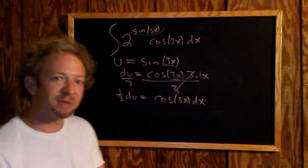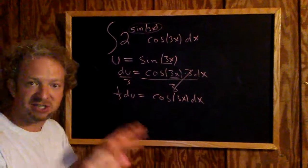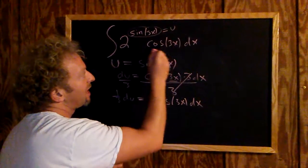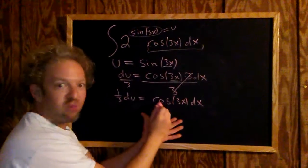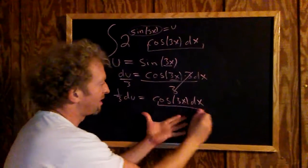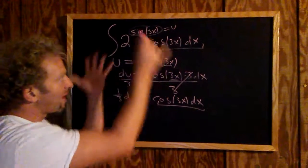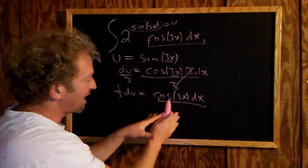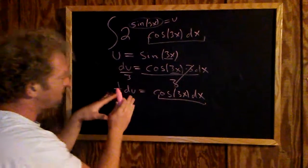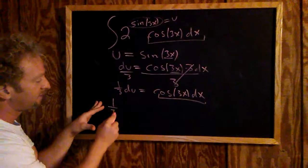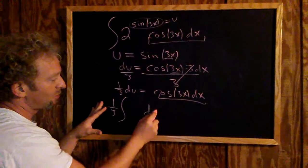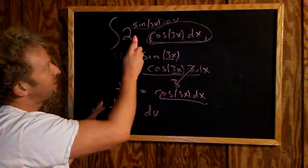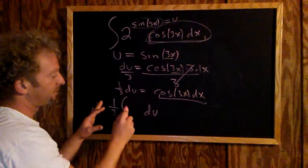Now we're ready to make the substitution. This piece that's circled is our u, and this piece here is 1/3 du. So now we're going to rewrite everything all at once: cosine 3x dx is going to be 1/3 du. We replace this, and then we just have to deal with 2 to the u.